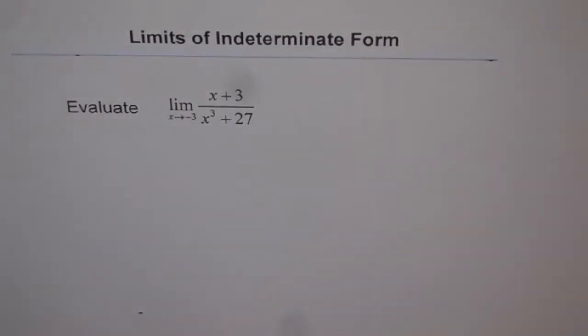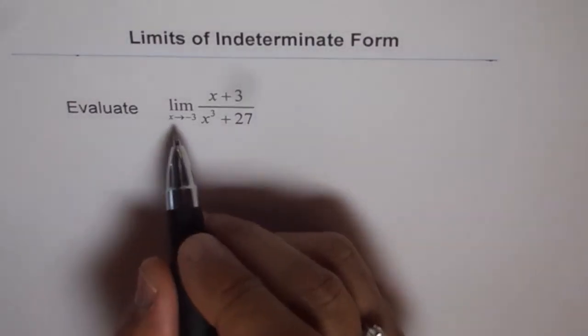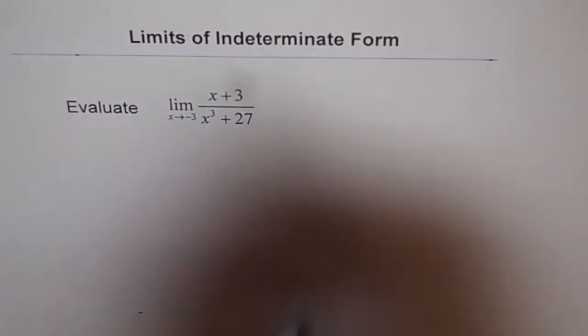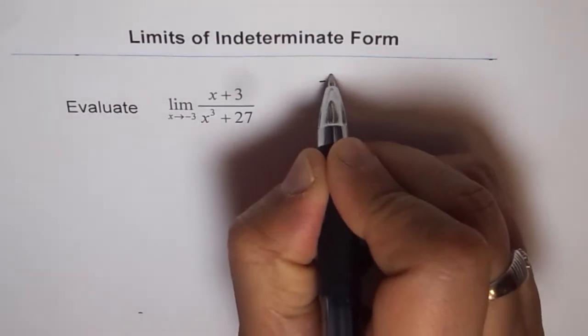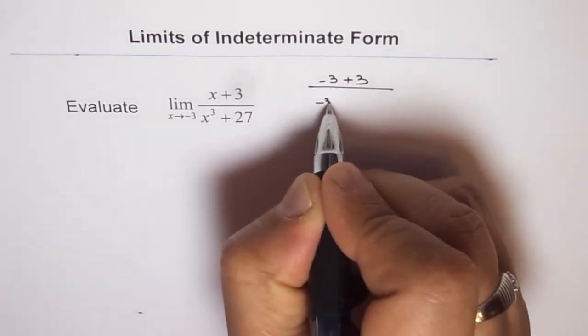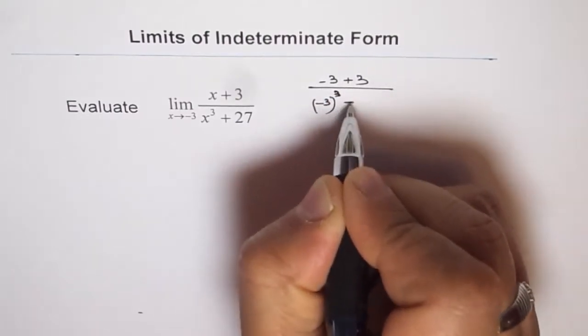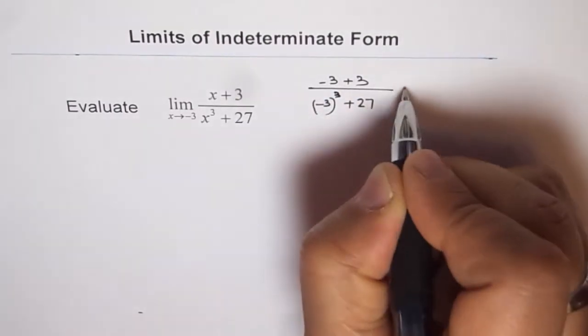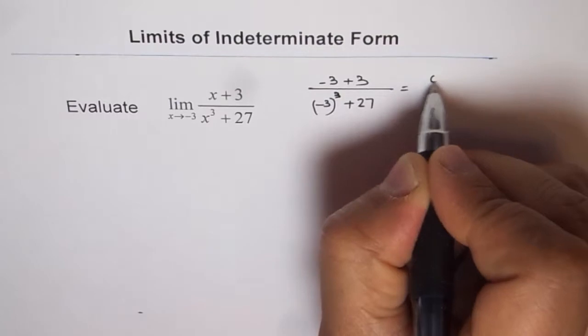Let's see what happens to the function when we substitute the limiting value minus 3. We get minus 3 plus 3 over minus 3 cube plus 27, and that gives us 0 over 0.